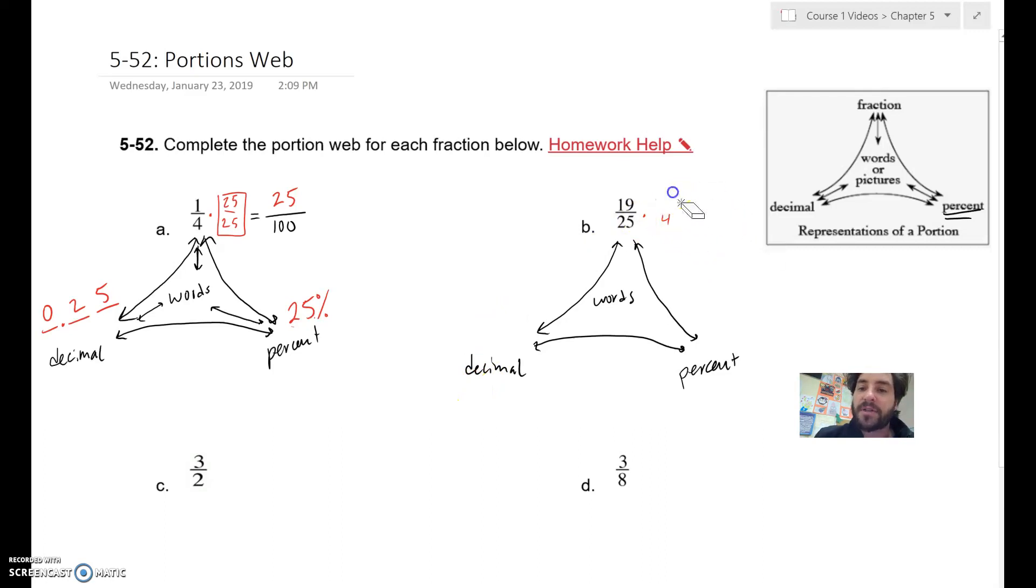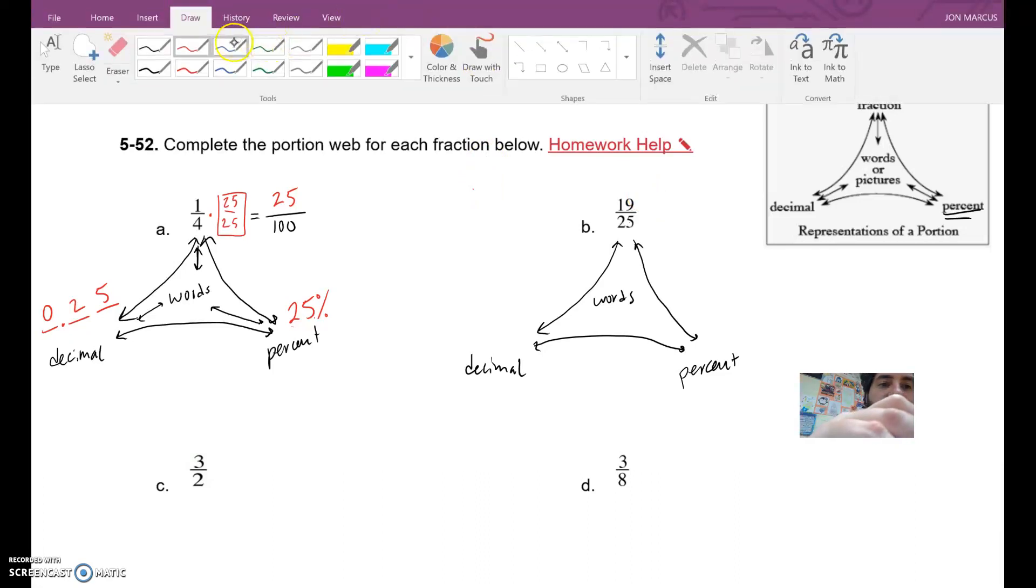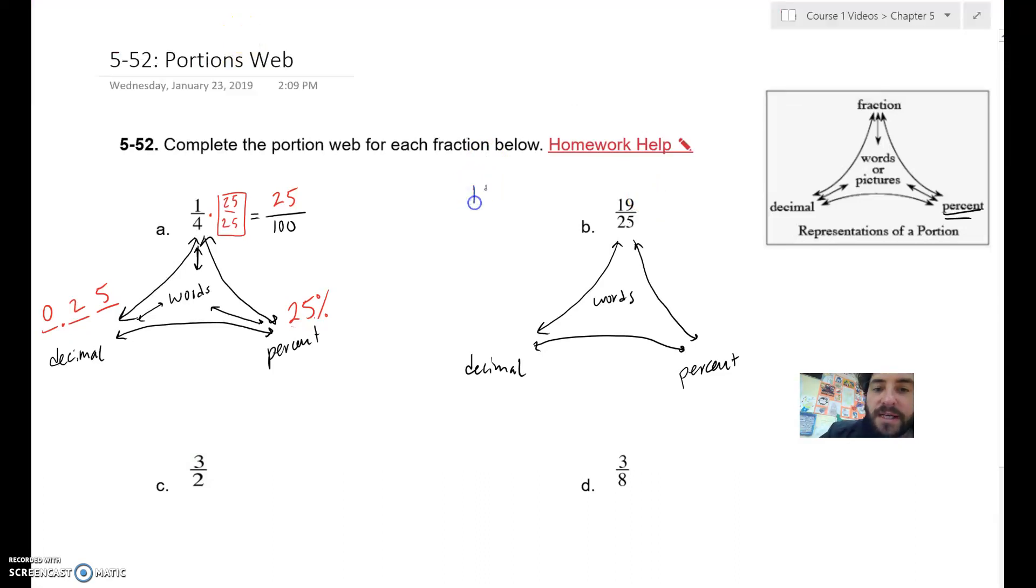That's how I do it. I would turn it into a decimal using division. So the way to do that is just to take 19 divided by 25, take the numerator, and divide it by the denominator. So take 19. Let's get a different color.